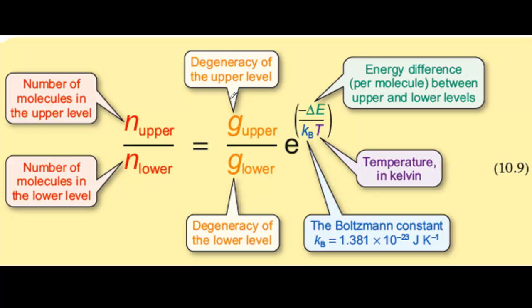Equation 10.9 is important in spectroscopy because you can use it to calculate the ratio of the number of molecules in the upper energy level to the number in the lower level.